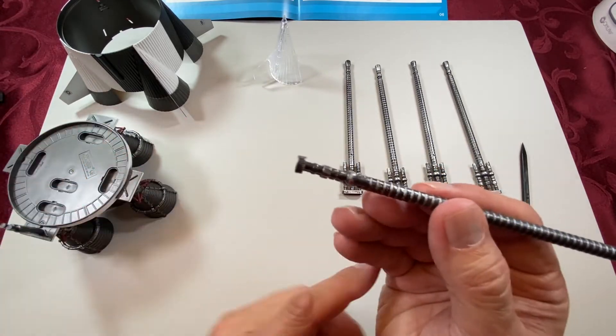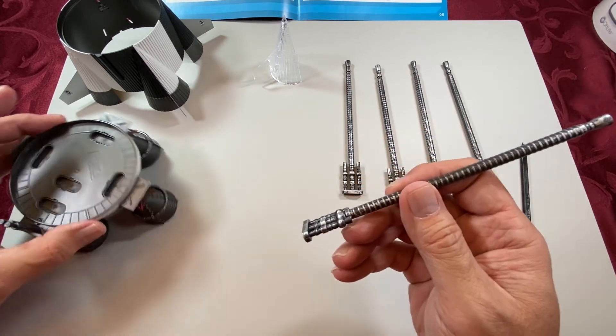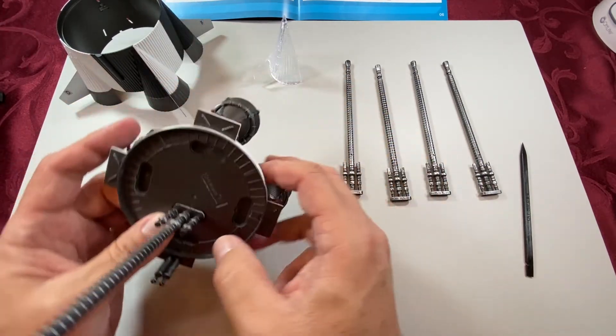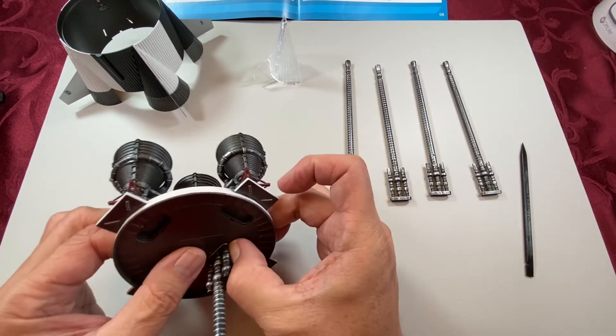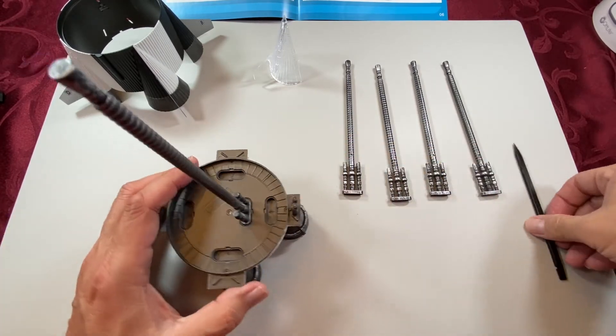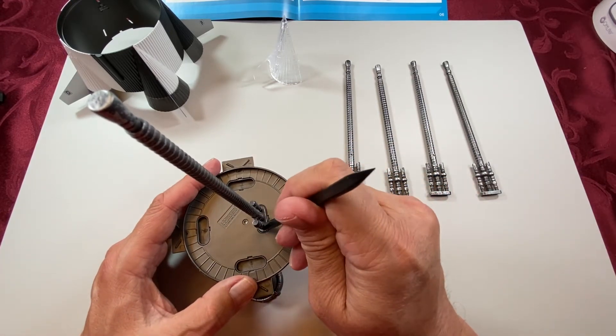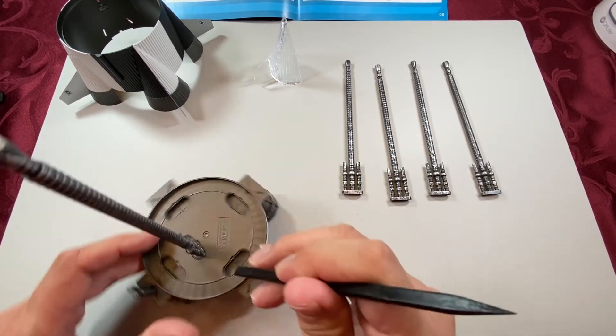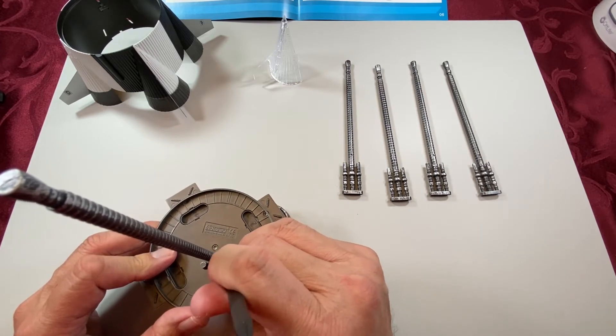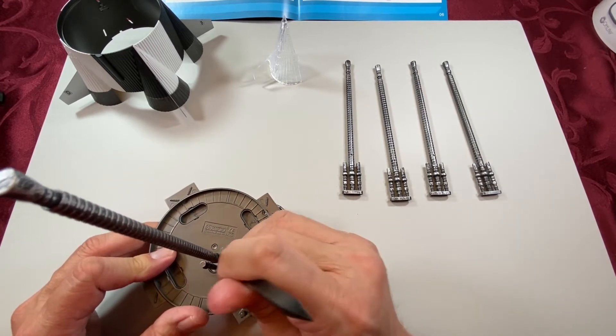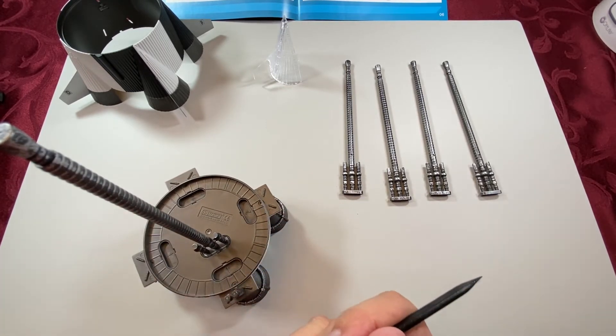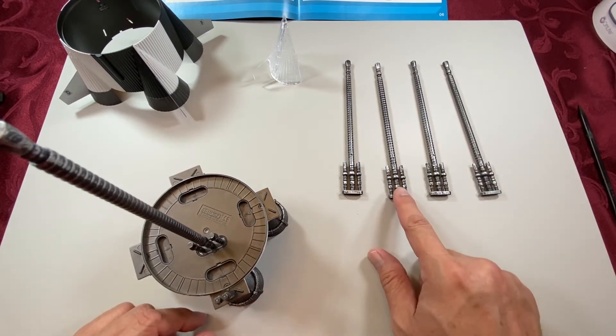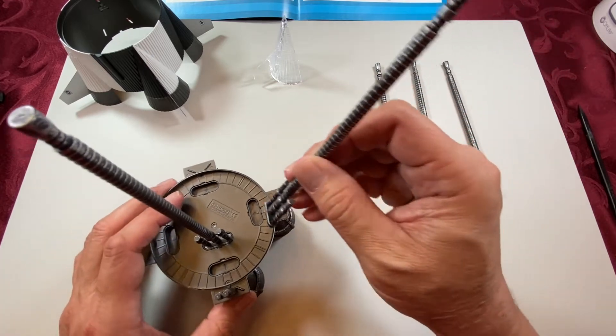This one is beveled too. You want to take that bevel and make sure it angles in towards the center of the rocket. You can learn from my mistakes. Fortunately, with a little bit of wiggling, that came out fairly easily. I don't think I want to use that. These pieces I believe should be all the same. Let's just make sure we get the bevel in the right direction.